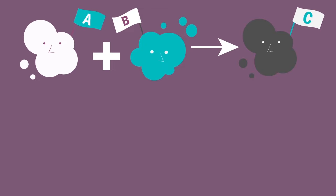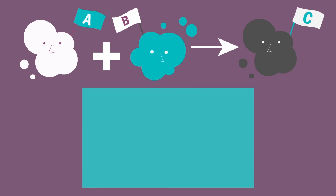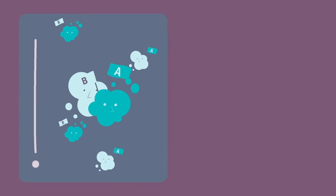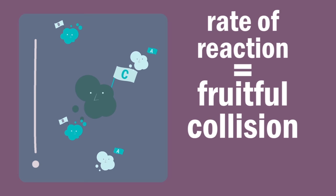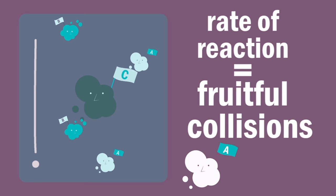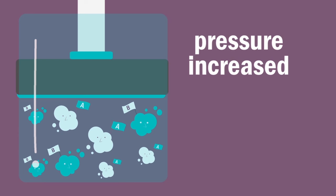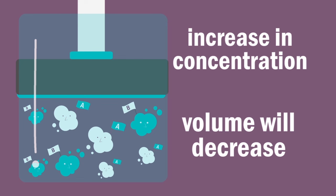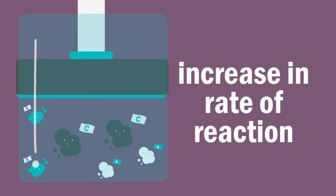As mentioned in our video Collision Theory and Reactions Part 1, for a reaction between gas A and gas B to occur, they must collide with sufficient energy. A collision resulting in a reaction is a fruitful collision, so the rate of reaction can be taken as the number of fruitful collisions between A and B per second. If the pressure on this reaction is increased, the volume will decrease. This decrease in volume results in an increase in concentration, so there are more fruitful collisions per second and therefore an increase in the rate of reaction.